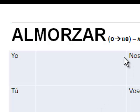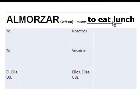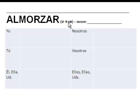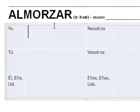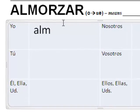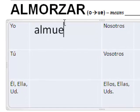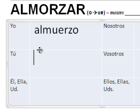Let's take a look at how almorzar changes. In a stem changing verb, we're going to change this o to 'ue'. How do you say I eat lunch? Well, if we change the stem, it won't be o anymore — it'll be 'ue'. Almuerzo. Yo almuerzo. Yo almuerzo con mis amigos. Yo almuerzo todos los días. Me gusta almorzar en la pizzería Barros.